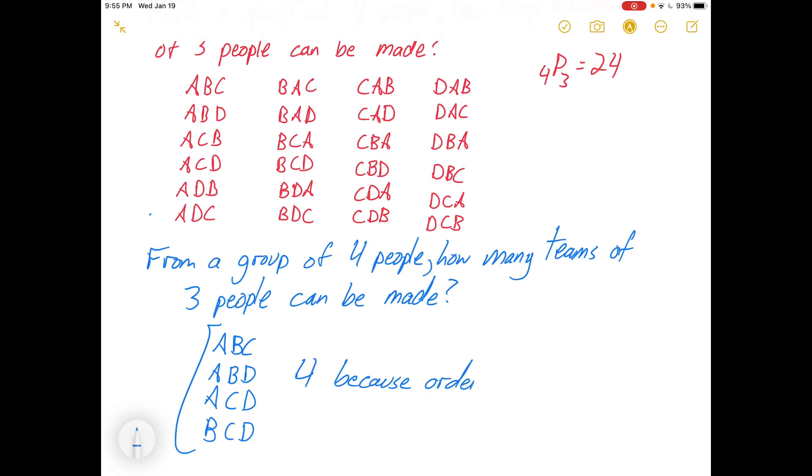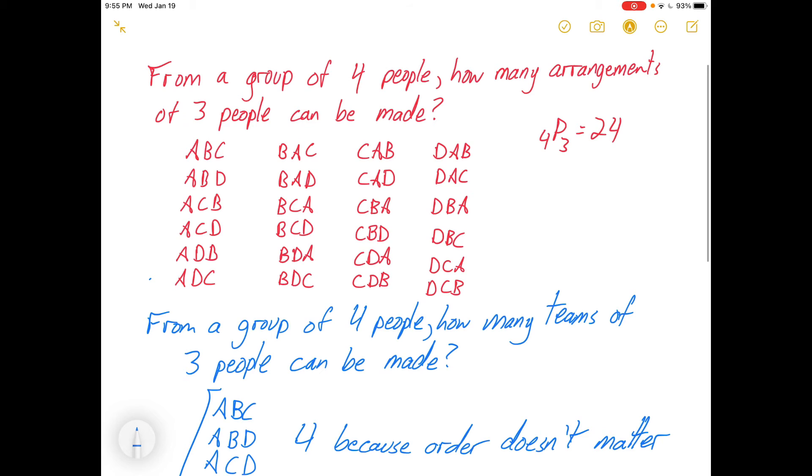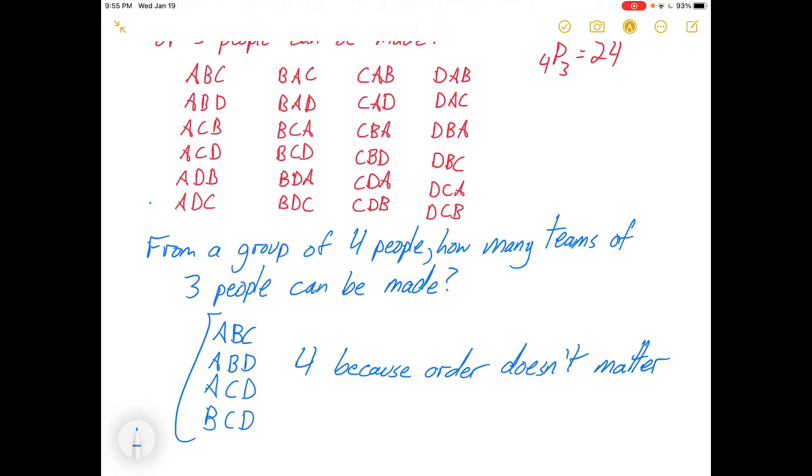If order doesn't matter, it's not a permutation. That is what a true mathematical combination is. It's a selection of objects where the order does not matter. If you're talking about a lineup or an arrangement, you're probably looking at a permutation. If you're looking at just a selection or a group or a team, then that's a combination.